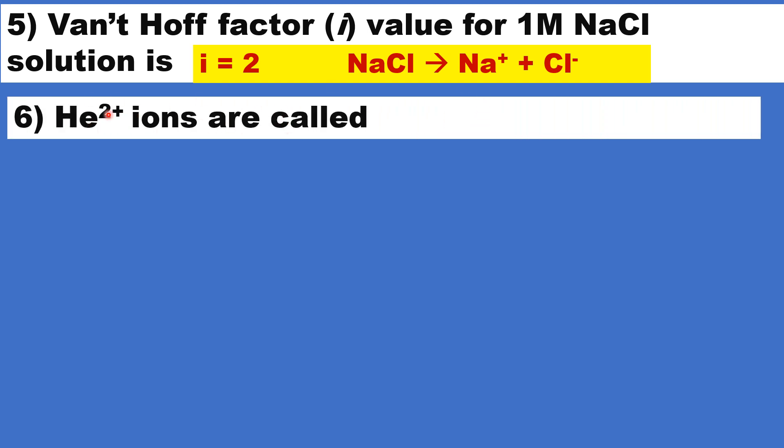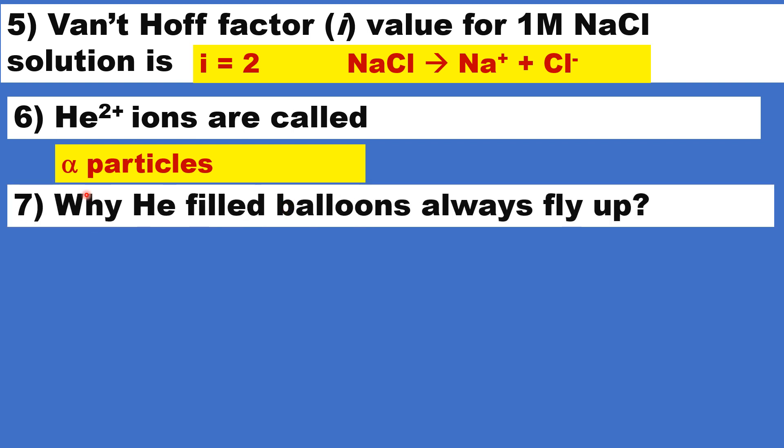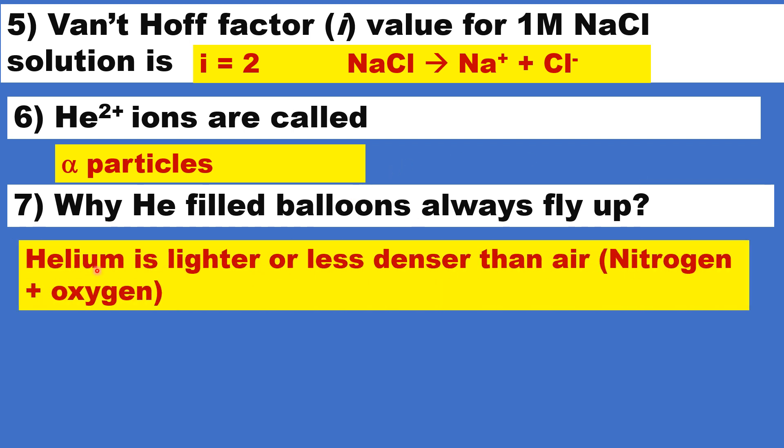Helium 2+ ions are called, they are nothing but alpha particles. Why helium filled balloons always fly up? Because helium is lighter or less dense than air, nitrogen and oxygen.